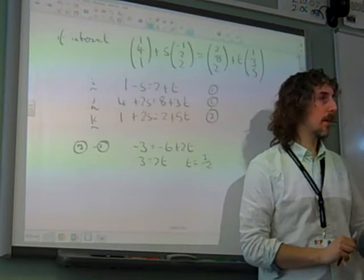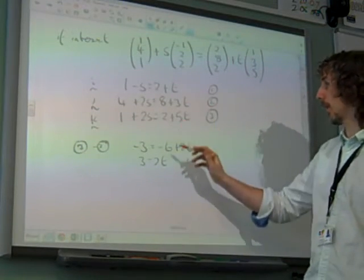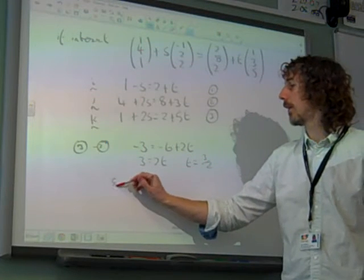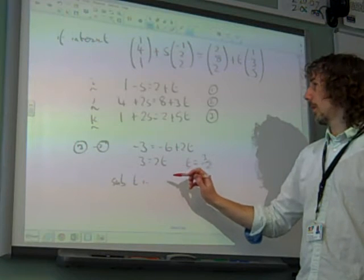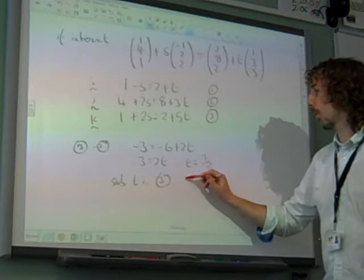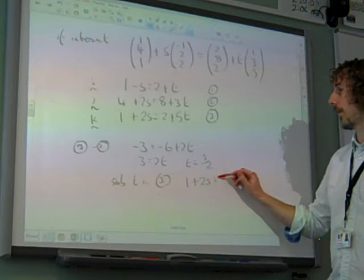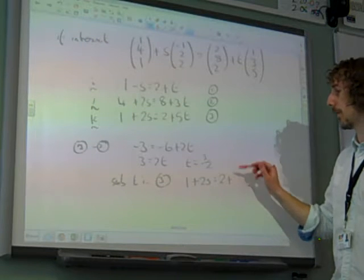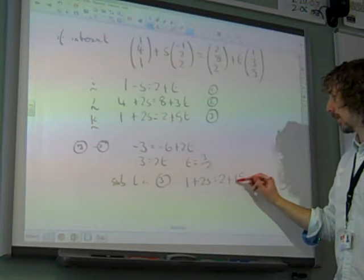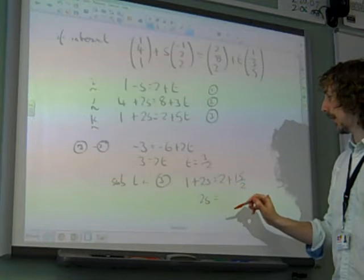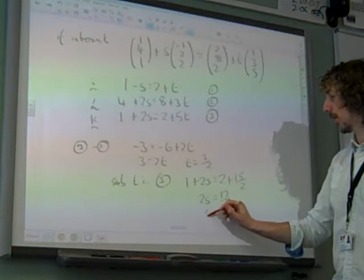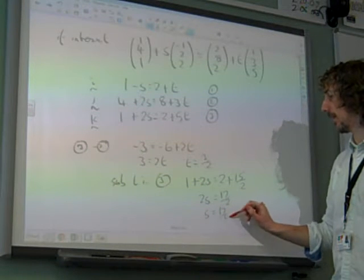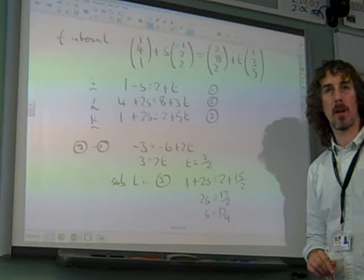Equation 2, I want to find the value of S that goes with that in one of these two equations, so let's sub that in. Doesn't matter which one I do it with, let's do it in equation 3. 1 plus 2S is 2 plus 5 times 3 over 2. 15 over 2, give me 2S is, what is that, 17 over 2, so S is 17 over 4 out of that.